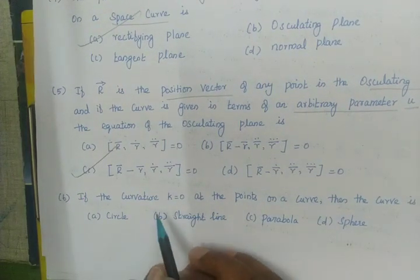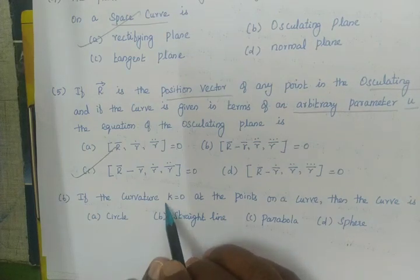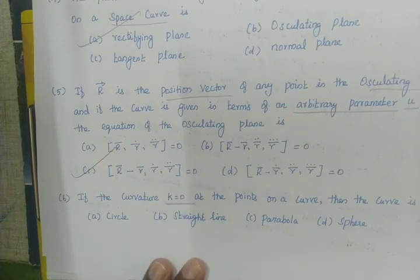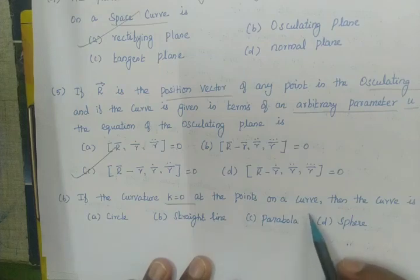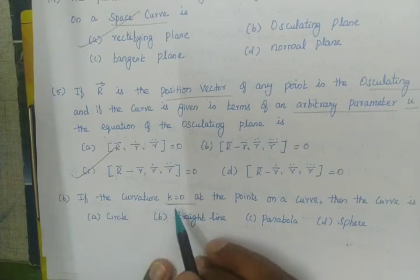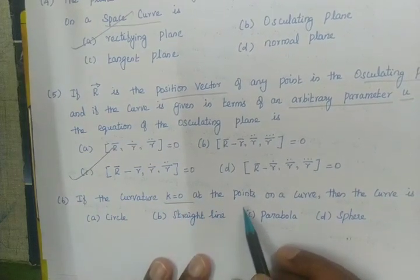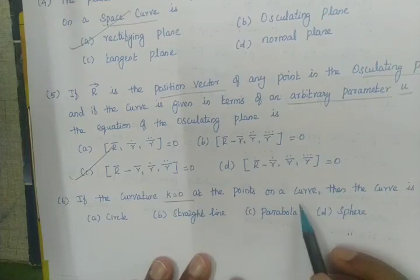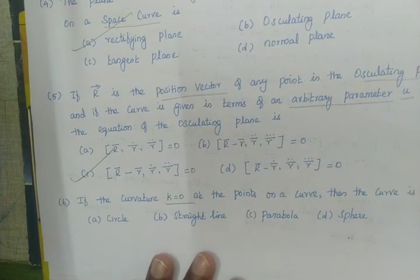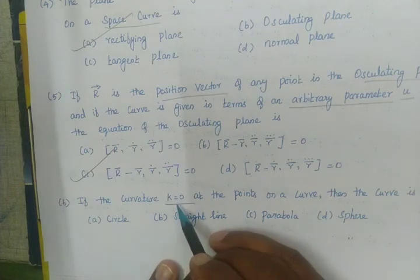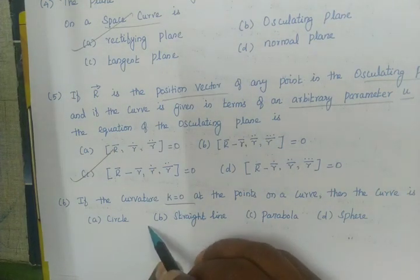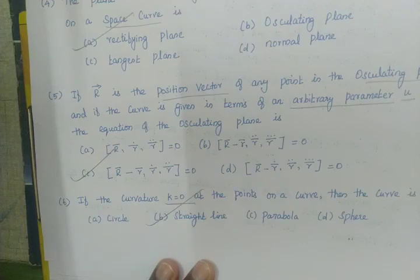If the curvature K equals 0 at all points on a curve, then the curve is called a straight line.